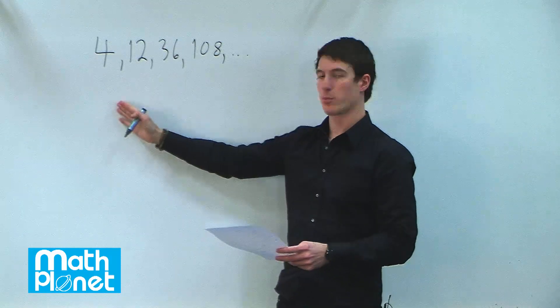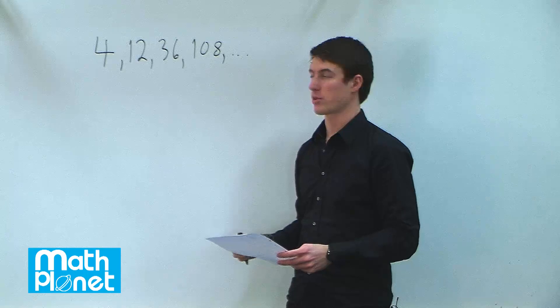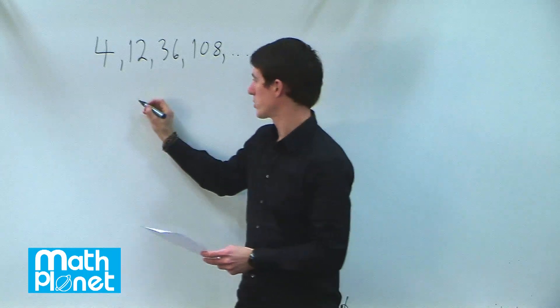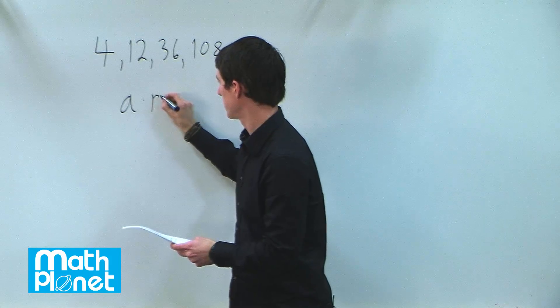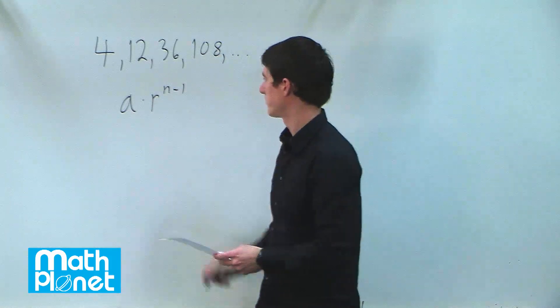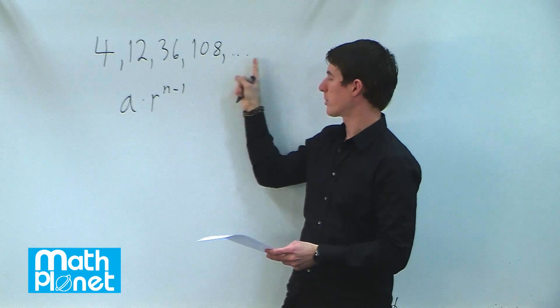So we can come up with a general formula that tells us what the value for different place holders are, and that equation is a times r to the n minus 1. So this will give us the value of any particular number in this series.